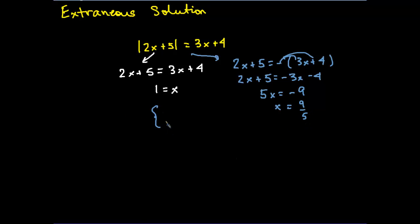Now, if I just stopped here and I said, okay, my answer is 1 and negative 9 fifths, those would be, algebraically, they would be correct. I did everything correctly. However, these are only solutions if, when I put them back into the original expression, it makes it true. So if I put 1 in for x here and 1 in for x here, would it make it true? And for the case of 1, it actually does make it true, so 1 is okay.